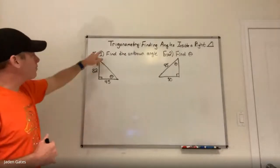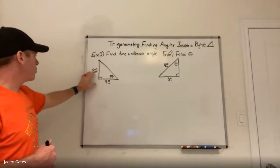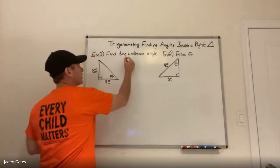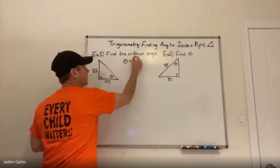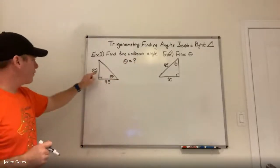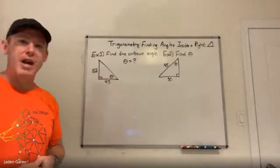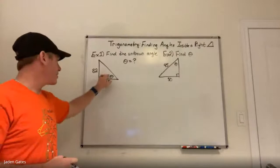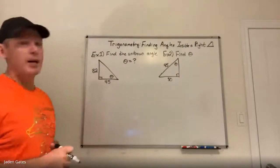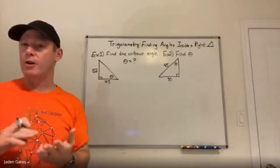In example one, I'm going to find my unknown angle theta. I have two sides: 45 and 82. The sides of the triangle have names based on this angle and the right angle, so we have three different sides: our opposite, our hypotenuse, and our adjacent.